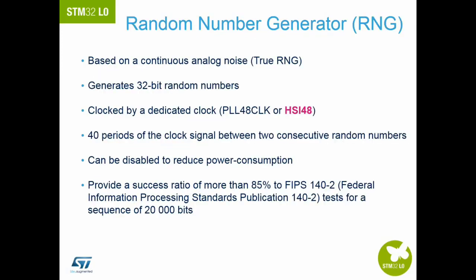The random number generator peripheral is available on the STM32 L0x2 or L0x3 devices. It is a true random number generator clocked by the 48 MHz HSI used by the USB peripheral. For low power applications, like all other peripherals, it can be disabled as required to save power.